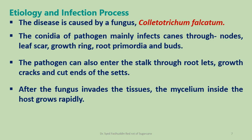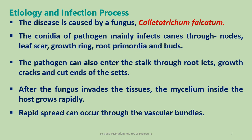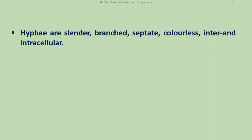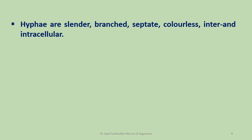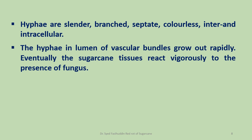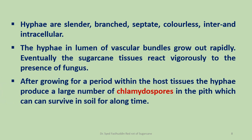After the fungus invades the tissue, the mycelium inside the host grows rapidly. Rapid spread can occur through the vascular bundles. Hyphae are slender, branched, septate, colorless, and both inter- and intracellular. The hyphae in the lumen of vascular bundles grow out rapidly, and eventually the sugarcane tissues react vigorously to the presence of the fungus. After growing for a period within the host tissue, the hyphae produce a large number of spores called chlamydospores in the pith, which can survive in soil for a long time.